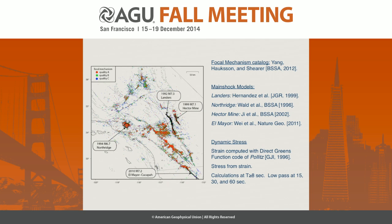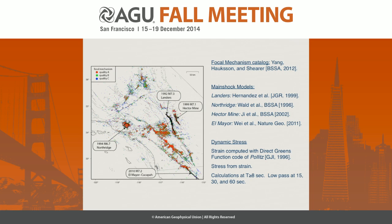The focal mechanism catalog I'm using is the Yonghaxon and Shearer catalog. I'm looking at four main shocks in Southern California, listed here with the authors whose time-dependent main shock models I've used. I've used Fred Pollock's direct Green's function code to compute strain grams, which I then turn into stress grams. All of this I'm doing at periods of eight seconds and greater, and I've also low-passed to 15, 30, and 60 seconds to investigate the dependence on that long-period energy.